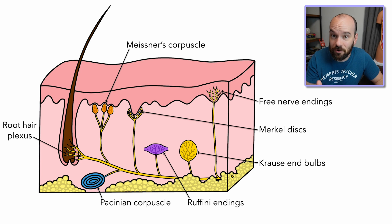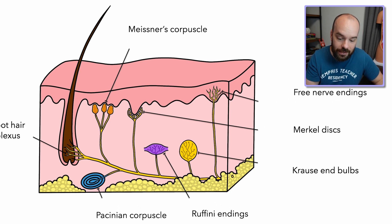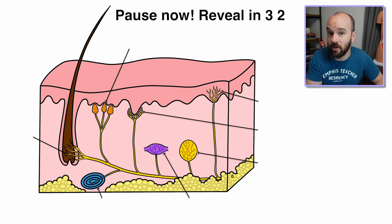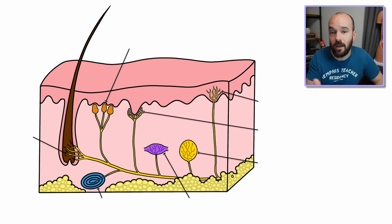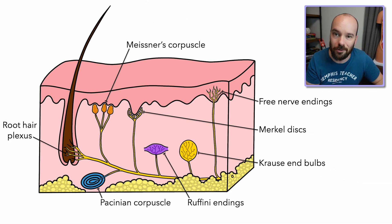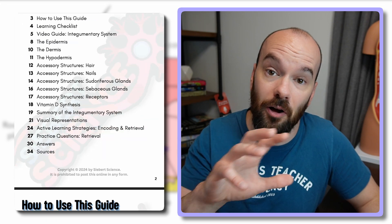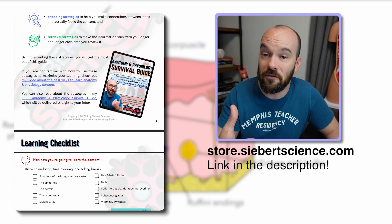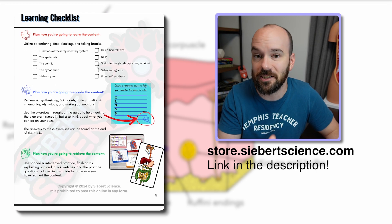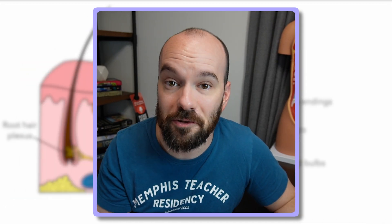If you're trying to learn all these sensory receptors for an upcoming test, the only way to really know it is to practice. Here's a blank diagram — pause the video and try to identify all the receptors and what each one detects, then check against the labeled diagram. If you're studying the integumentary system as a whole, check out my complete guide to the integumentary system linked in the description, which covers all the information with practice strategies. I also have a free A&P survival guide to help you maximize your studying — also linked in the description.